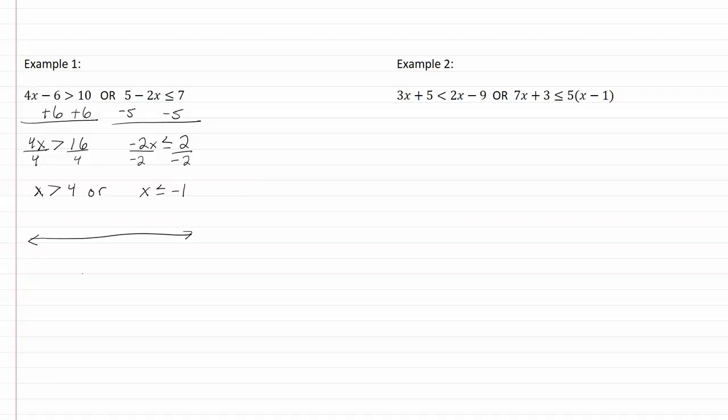So let's put those on our graph. Negative one is going to be here, four will be here. Remember that you need to put them in order from smallest to largest. Our negative one is going to be a closed dot and x is less than that so it's going to be going to the left.